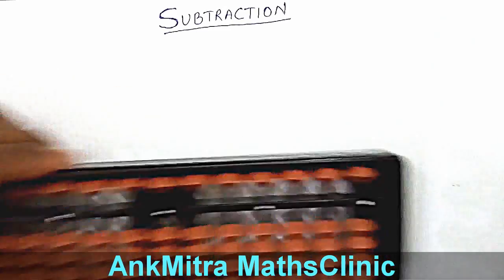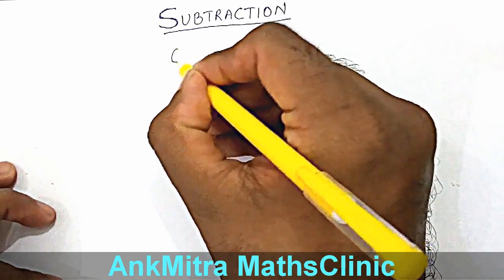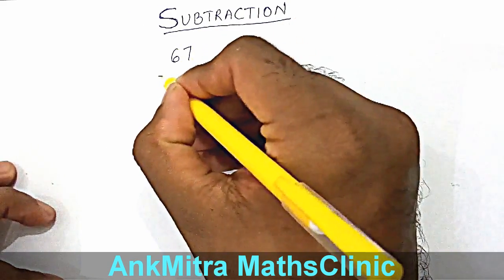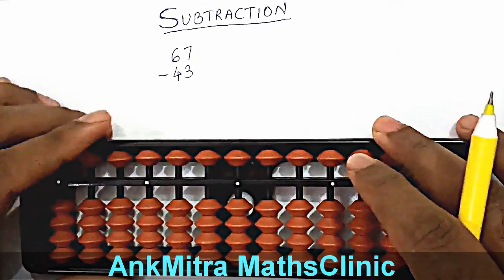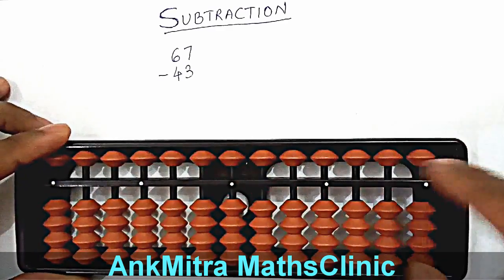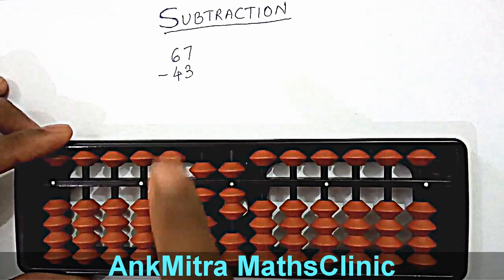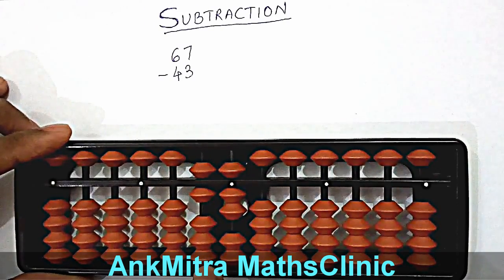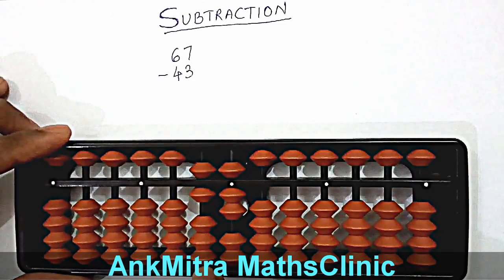Let's take an example where we have to subtract 67 minus 43. So we'll first take the number 67 on the abacus, and for subtracting 43, we are supposed to subtract 4 on the tens place. We don't have 4 beads, but we have 5 available for subtraction. So we'll use the small friend of 4.